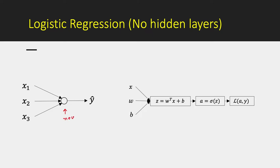We called it a neuron — it can be thought of as a mini neural network. Inputs come in, it performs some computation and generates the output, also written interchangeably as y-hat, which is the estimated output. The corresponding computation graph feeds in the weights, input, and bias; we calculate z, and from z we calculate a, the predicted output. Based on the predicted output and the actual output we calculate a loss function.